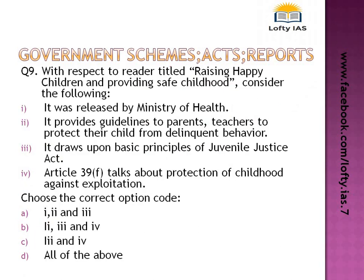Question 9: with respect to guidelines titled 'Raising Happy Children and Providing Safe Childhood.' The first statement says it was released by the Ministry of Health — this is incorrect; it was released by the Ministry of Women and Child Development. The second statement — it gives guidelines to parents and teachers to protect children from delinquent behaviour — is correct. The third statement — it draws upon the basic principles of the Juvenile Justice Act — is also correct. The fourth statement — Article 39F talks about protection of childhood against exploitation — is correct. Go home and read Article 39 of the Constitution regarding protection of childhood. Answer: 2, 3, and 4.